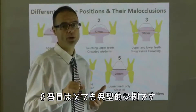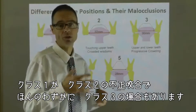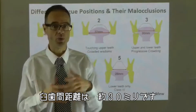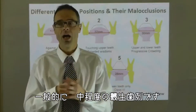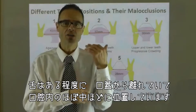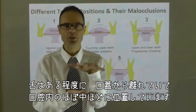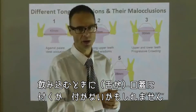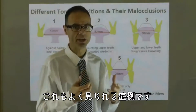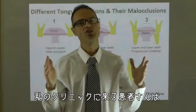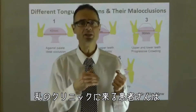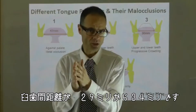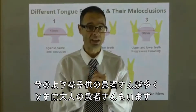Example number three is the classic — from class one malocclusion, or even class two, or mildly class three malocclusions — where there's approximately a 30 millimetre intermolar width. With that, you'll have a moderate amount of crowding, and the tongue sits midway in the mid-space of the oral cavity rather than at the roof of the mouth. It may or may not go up to the roof of the mouth for swallowing. When I look at individuals attending my clinic, I classically see an intermolar width somewhere between 29 and 34 millimetres — that seems to be standard for both children and adults coming to see me.